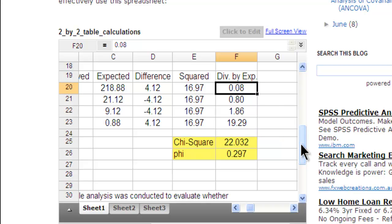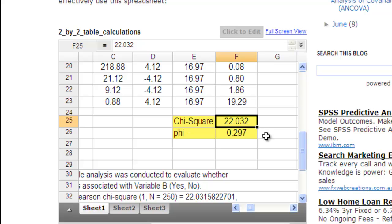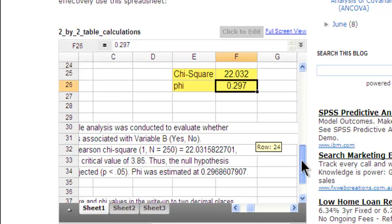I also make reference to this spreadsheet. Down here is the chi-square value, and then it gives you a measure, basically a correlation, it's called phi or phi, it's 0.297. And then at the bottom, it gives you an interactive write-up of the results.